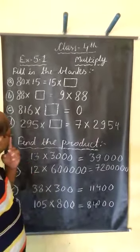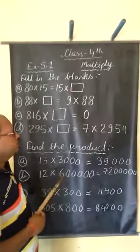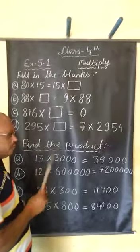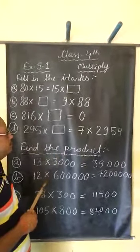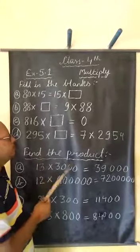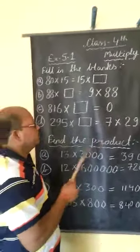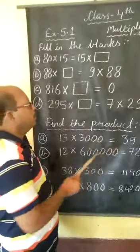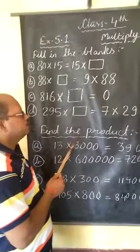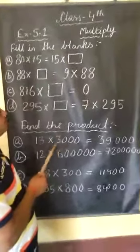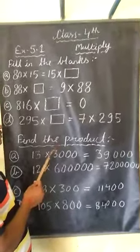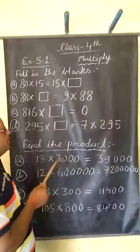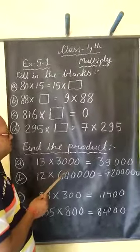First, if numbers are interchanged, the product value will not change. If we multiply 5 with 3 we get 15, and when we multiply 3 with 5 we also get 15. The value does not change after changing the number sequence — whether we write the first number first or the second number first, the products are the same. This is property number 1.